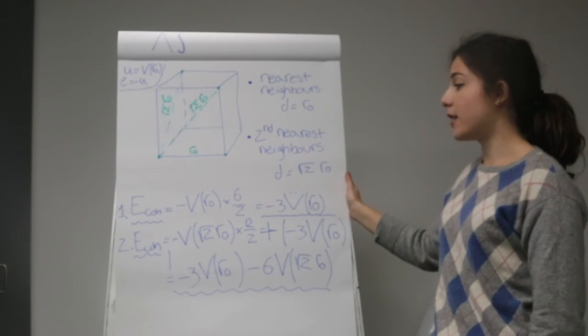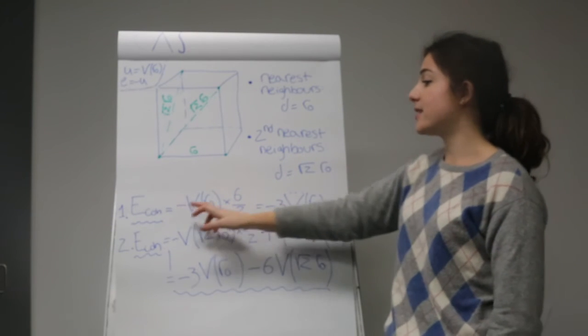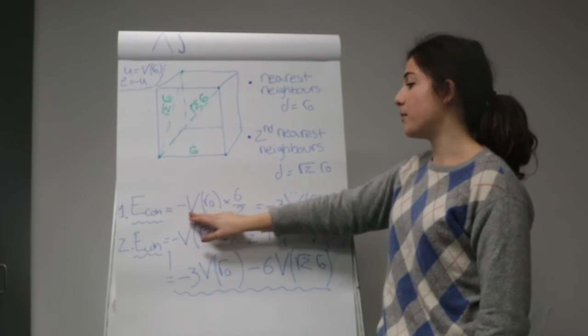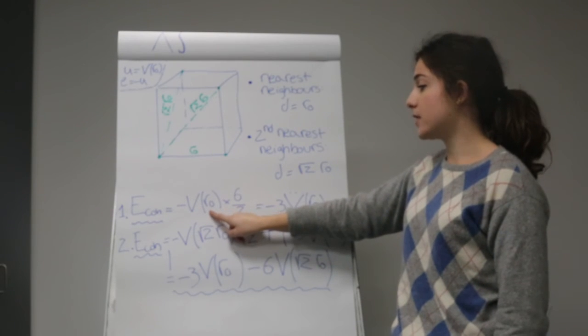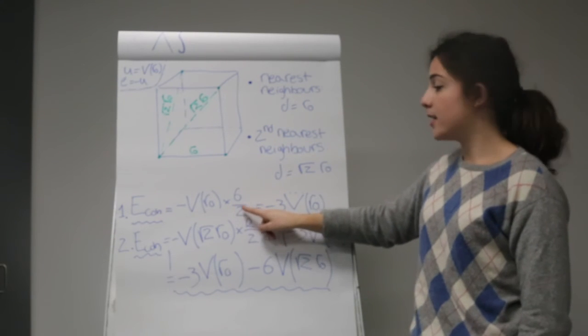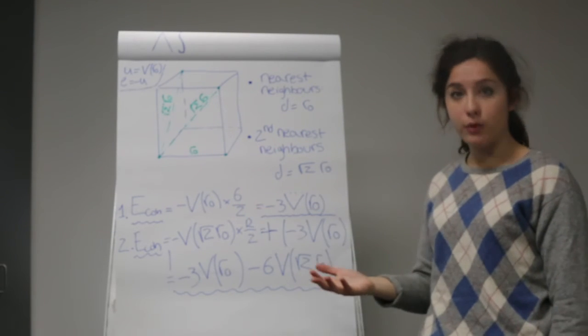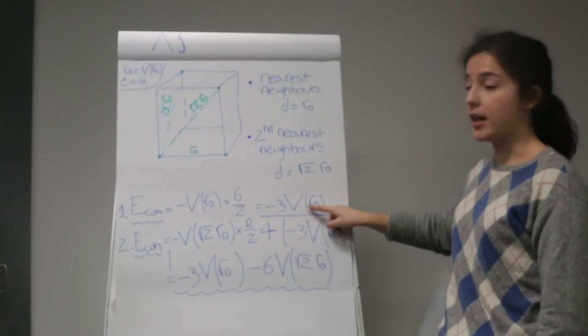But we need to think about how strong the bond is. So if we have an interaction that only affects the first nearest neighbors, we calculate the cohesive energy of the solid by thinking about the potential energy per atom, potential at R0, times the number of nearest neighbors, which in this case is 6, divided by 2, because each bond would be shared between two atoms.